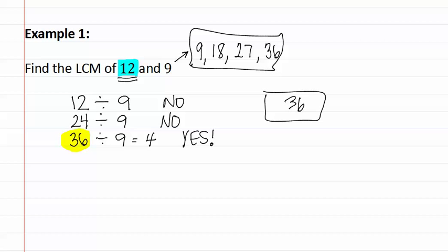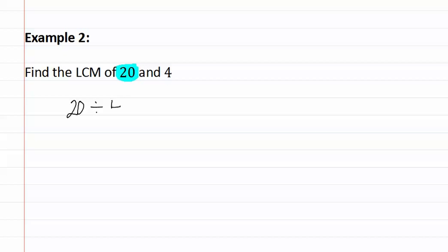Let's try this again in example two. Example two asks us to find the least common multiple of twenty and four. Starting with twenty times one, which is twenty — this is the first multiple of the larger number. We see if it divides by the smaller number: twenty divided by four is five, so yes it does divide. We did not have to look for any more multiples, as the first multiple of twenty divides evenly by the smaller number. This means that our least common multiple is twenty.